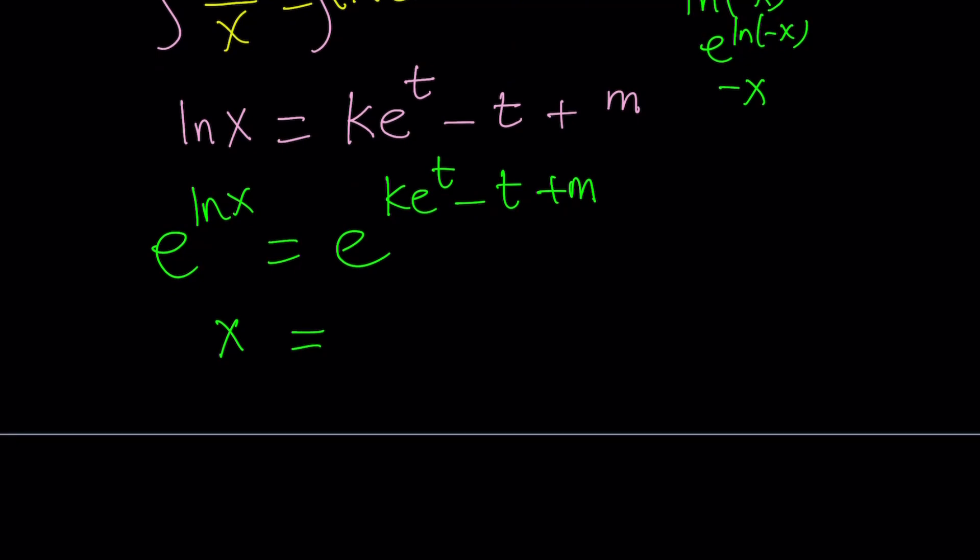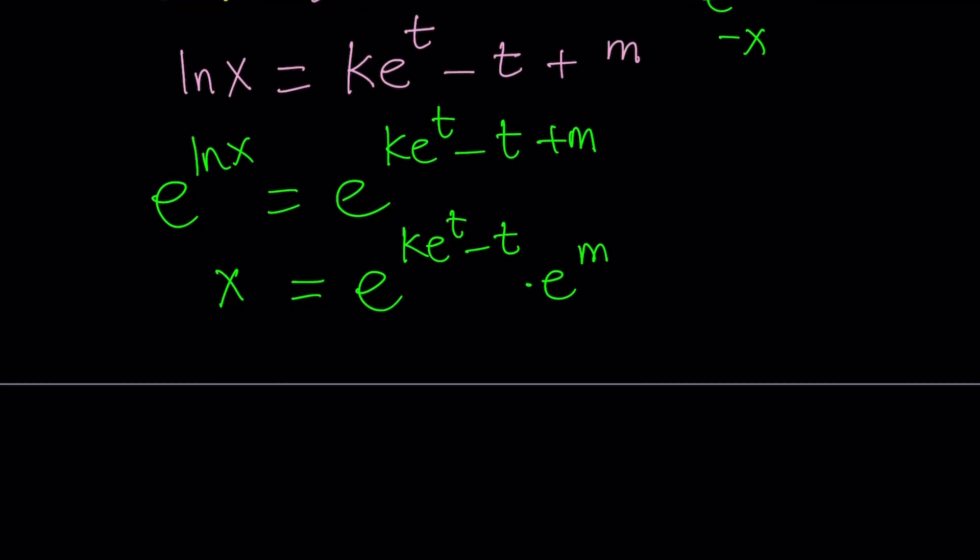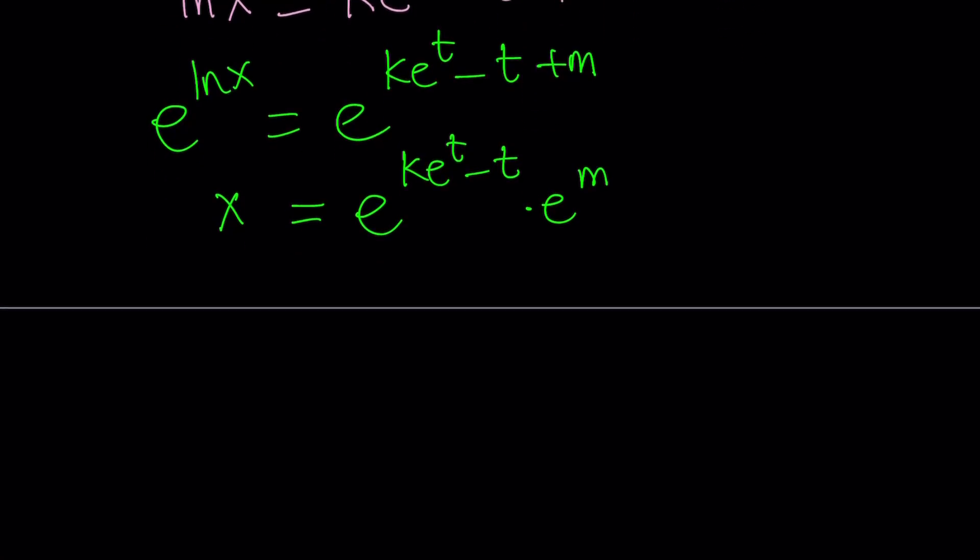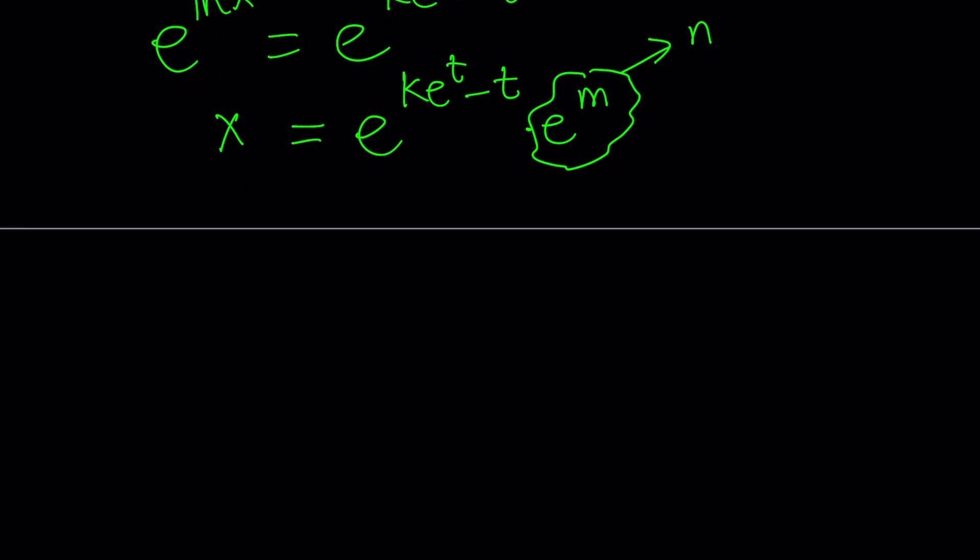Let's focus on this now. I can write this as e to the power ke to the t minus t, and then times e to the power m. But notice that e to the power m is a constant. So we can write this as, we're kind of running out of constants here. What should we use? Maybe an n, maybe n would be okay, right? Don't use x, y, z, because they're usually saved for non-constants.